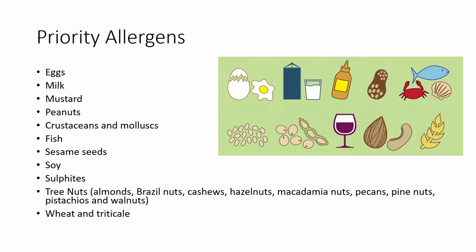Something interesting is that here in Canada we do not classify coconut as a tree nut, whereas in the United States coconut is classified as a tree nut and labeled as an allergen. Last but not least, we have wheat and triticale. I'll talk about gluten in a moment because gluten is a separate category and we label gluten sources as well.